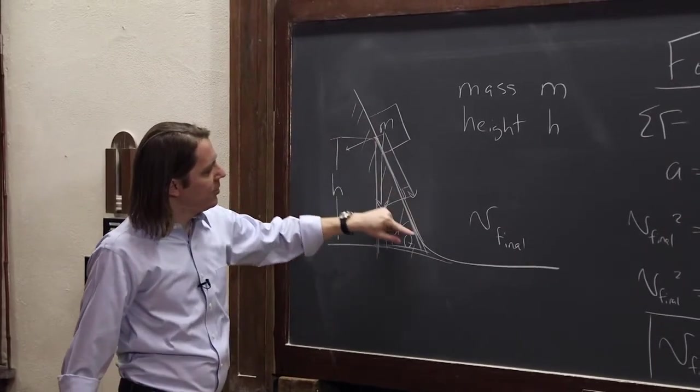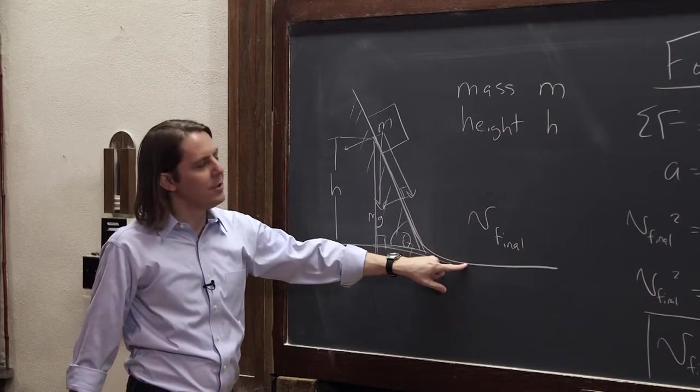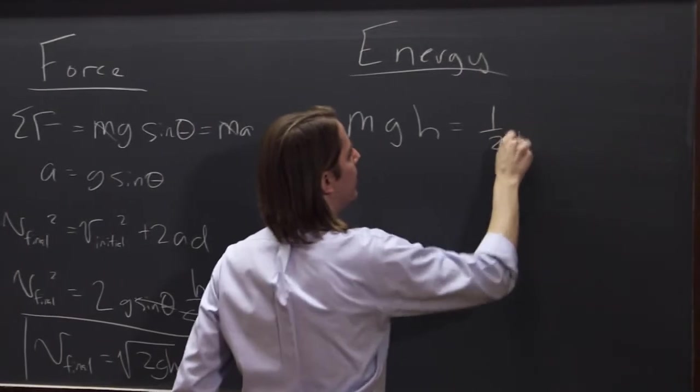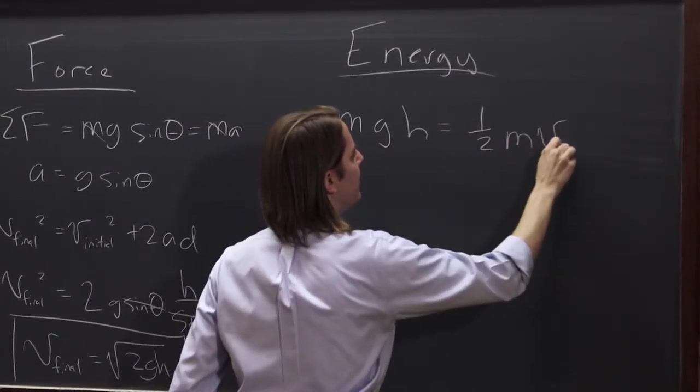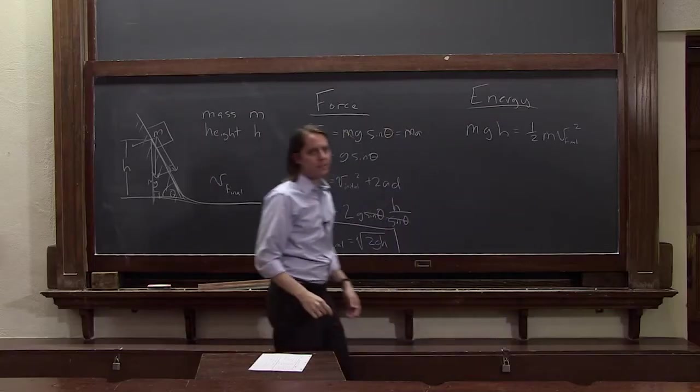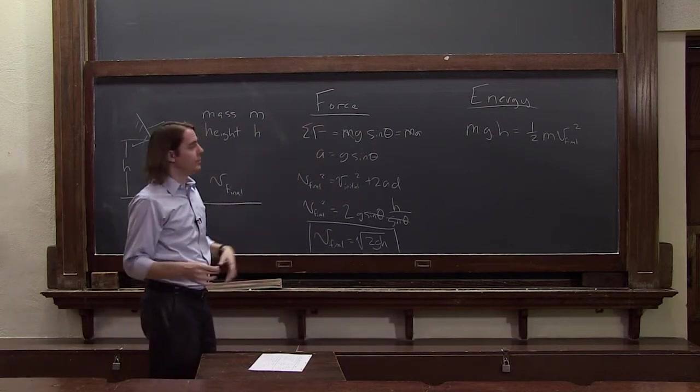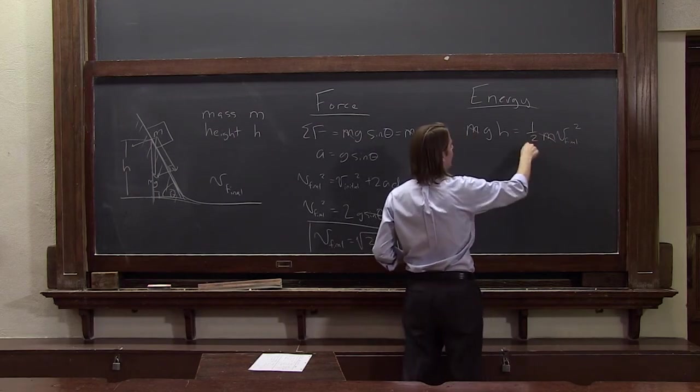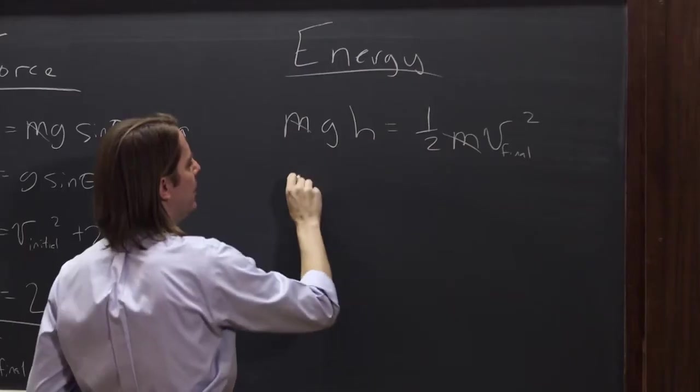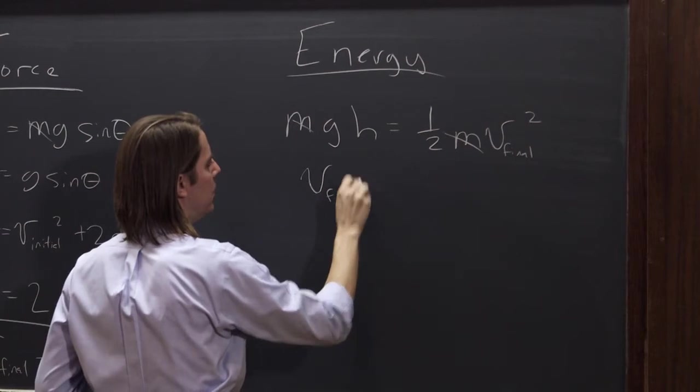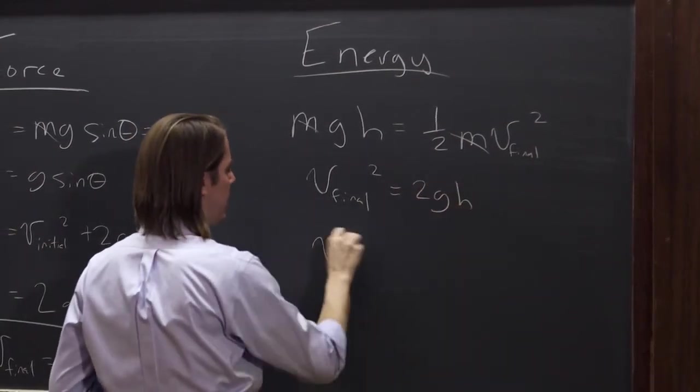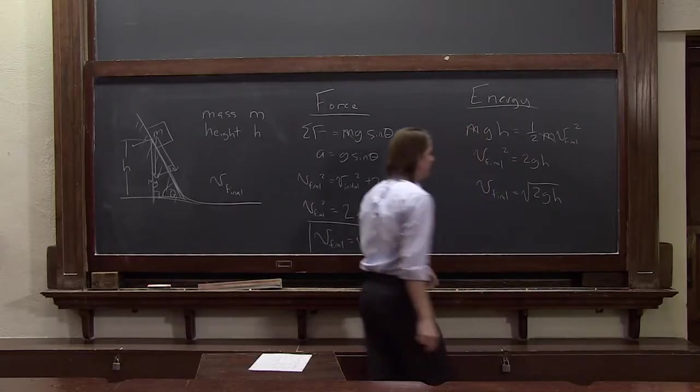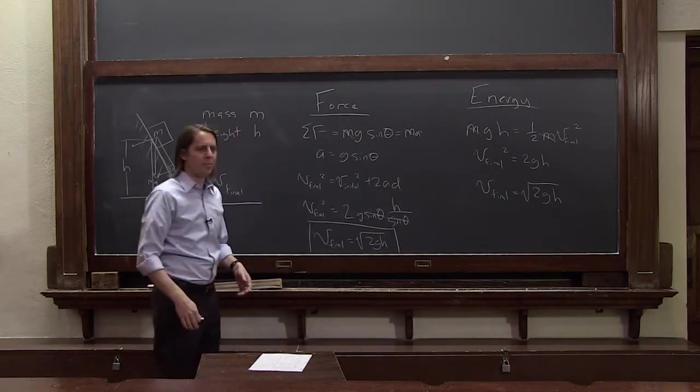And you know that when it slides all the way down to here, that gravitational potential energy is going to be converted to kinetic energy. So mgh becomes 1/2 mv final squared. So just solve for v final. The masses go away, and this 2 comes over here, and you get that v final squared equals 2gh. Therefore, v final is the square root of 2gh. And it's the same. What do you know?